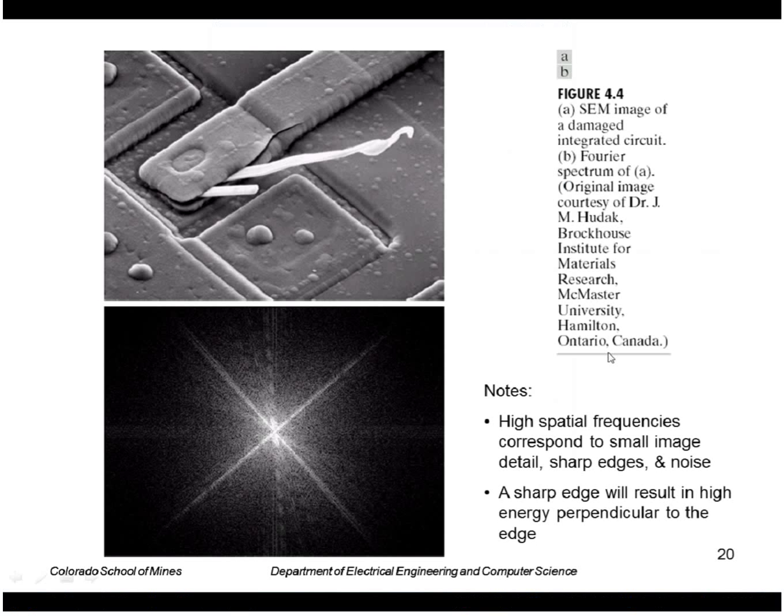Here's an example of another image and its transform. So a couple of things to note on these things. One is that if you have a sharp edge in the image, like the edges of this thing here, those lead to high spatial frequencies. So this edge, for example, produces all of this, all of these values in this direction and this direction.